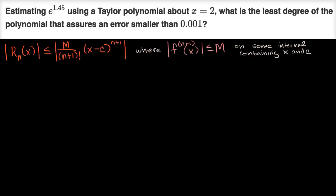As a reminder, Taylor's Remainder Theorem tells us that the absolute value of the remainder for the nth degree Taylor polynomial is going to be less than this expression. Here, n is the degree of our polynomial, x is the x-value at which we are calculating the error — in this case 1.45 — and c is where the Taylor polynomial is centered. Our m is an upper bound on the absolute value of the n plus one-th derivative of our function. When we work through the details of this example, it'll make things more concrete.